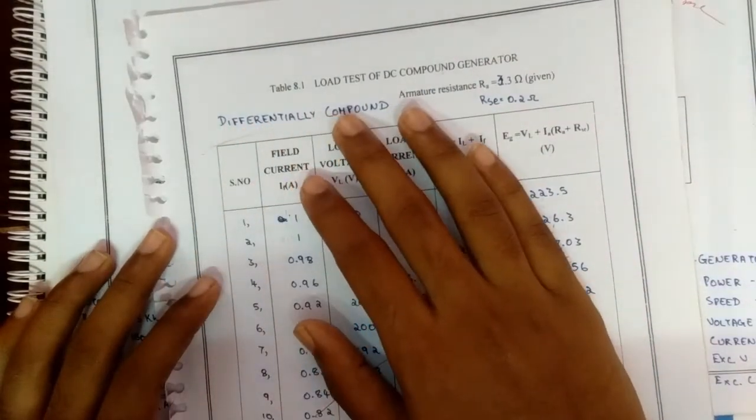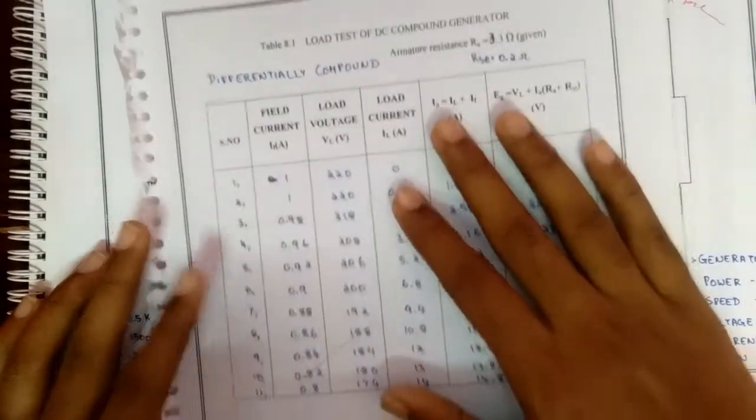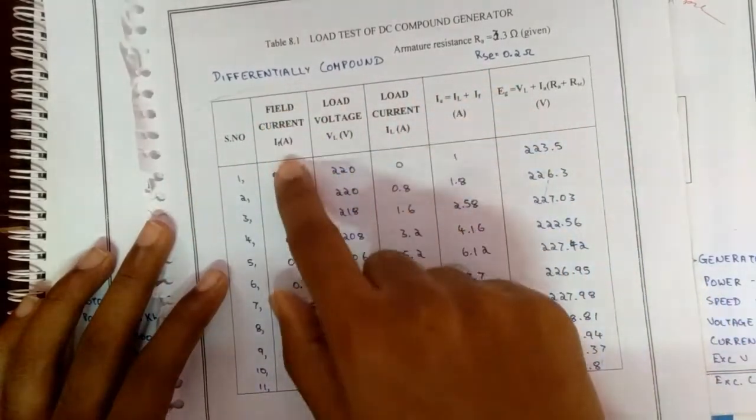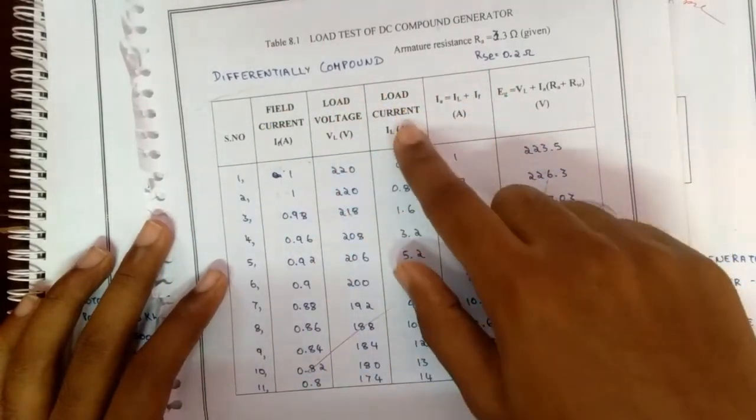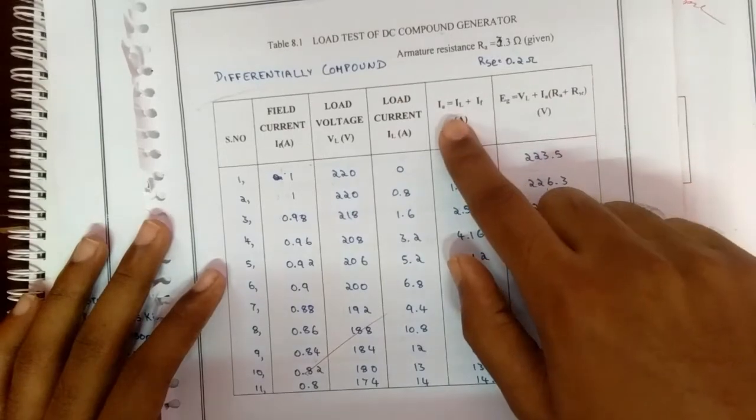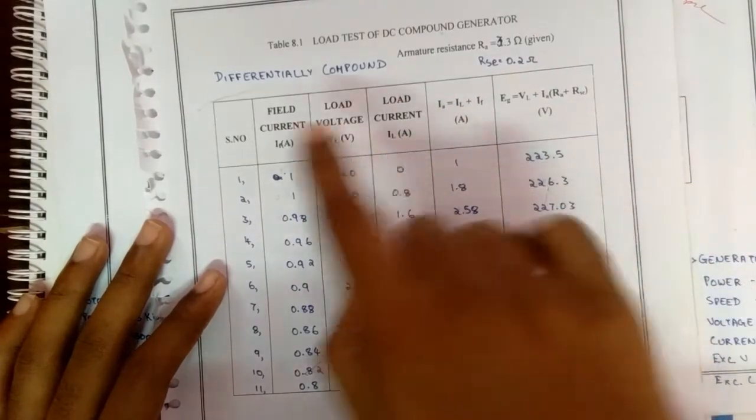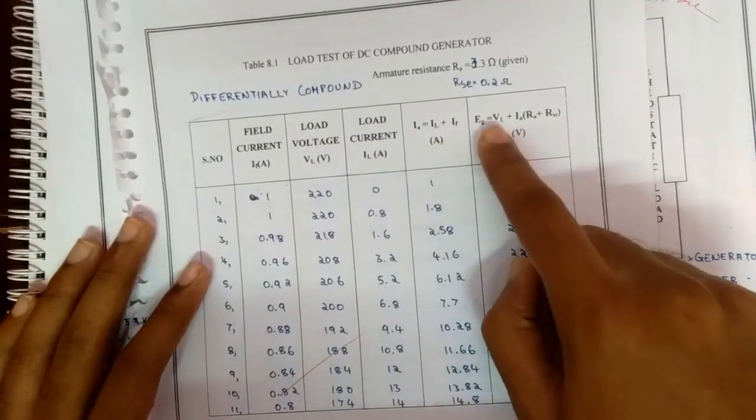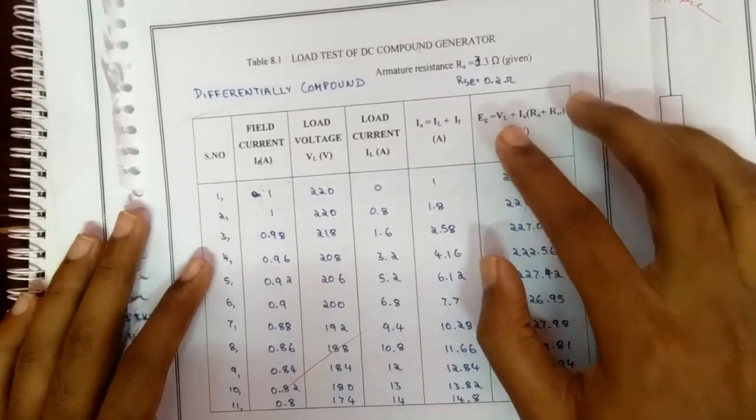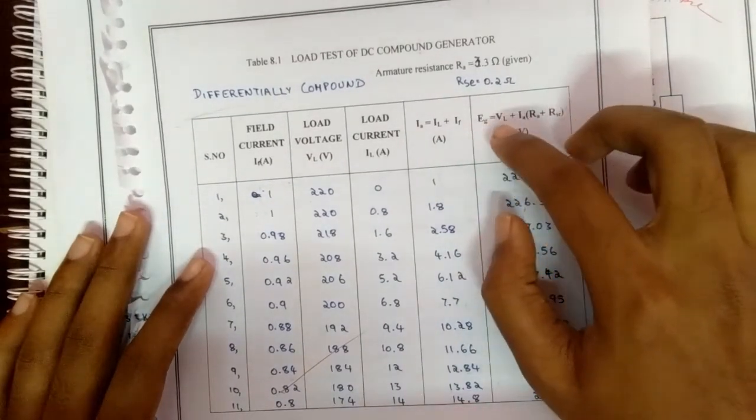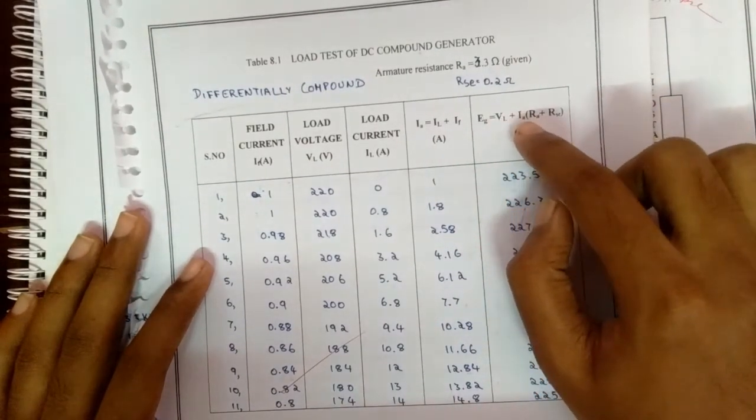For a differentially compound test, I have taken field current, load voltage, load current, and then IA = IL + IF, and EG. Finally, the generated back EMF will be EG = VL + IA(RA + RSC).